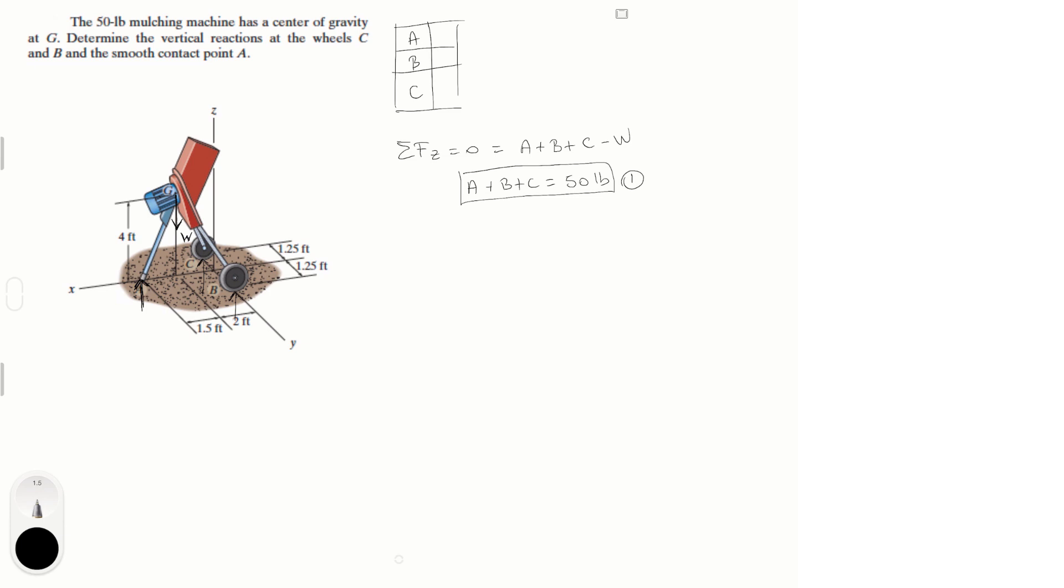Now, I'm going to pick sum of the moments at Y because sum of the moments at Y cancels out C and B which is two of our variables. So, sum of the moments at Y is equal to 0 and it is equal to first the weight which happens here times the distance from the CY plane which is the weight times 2.